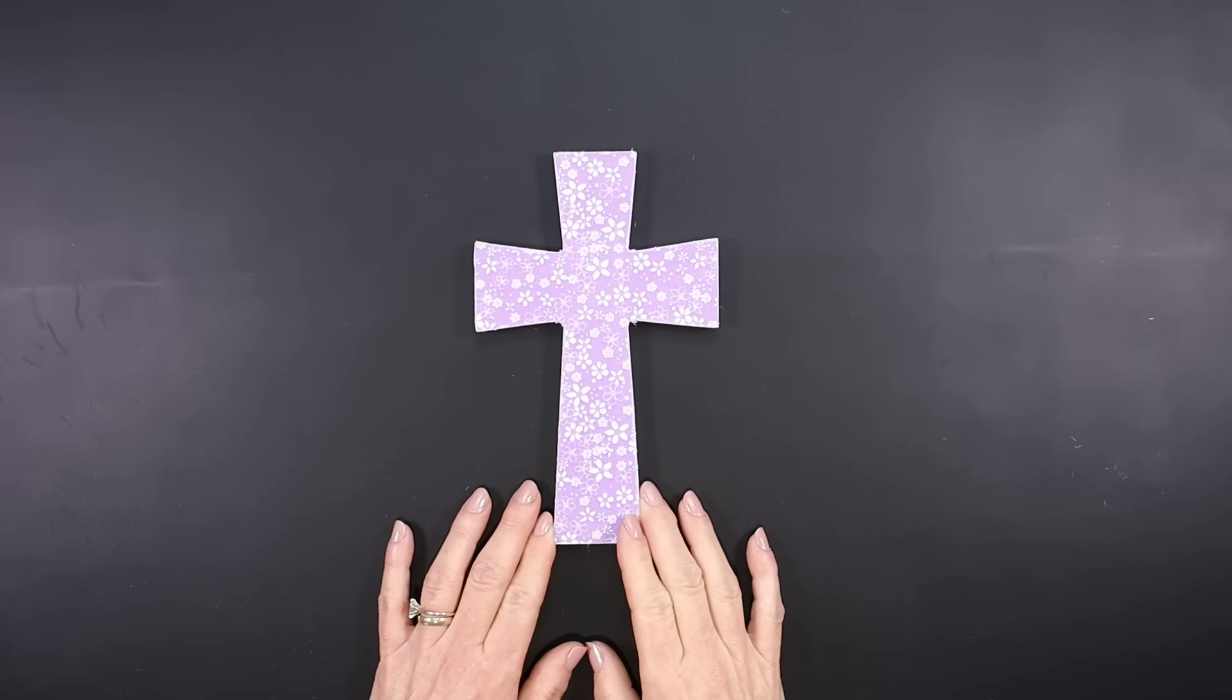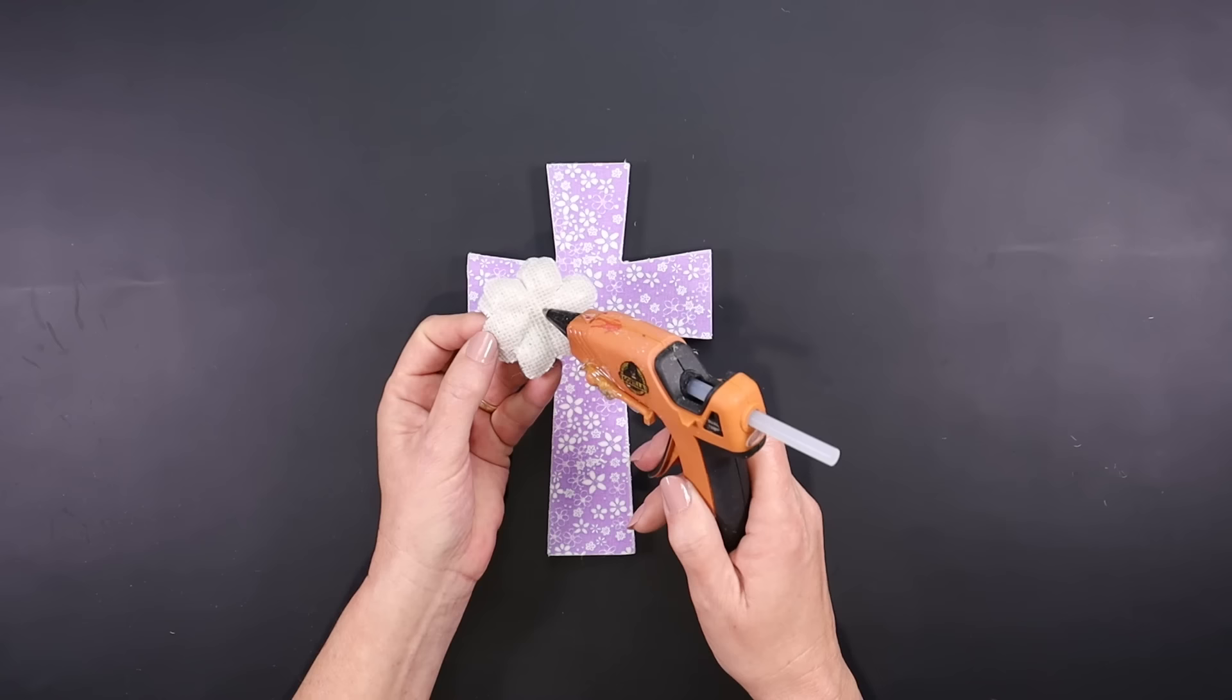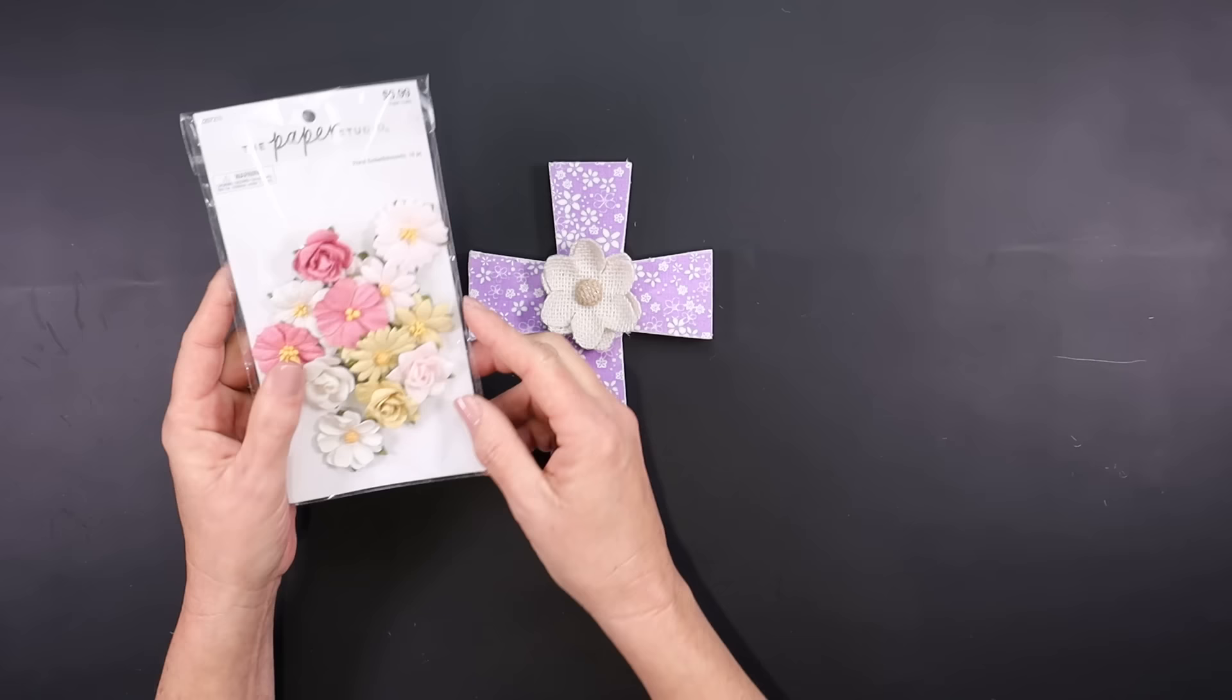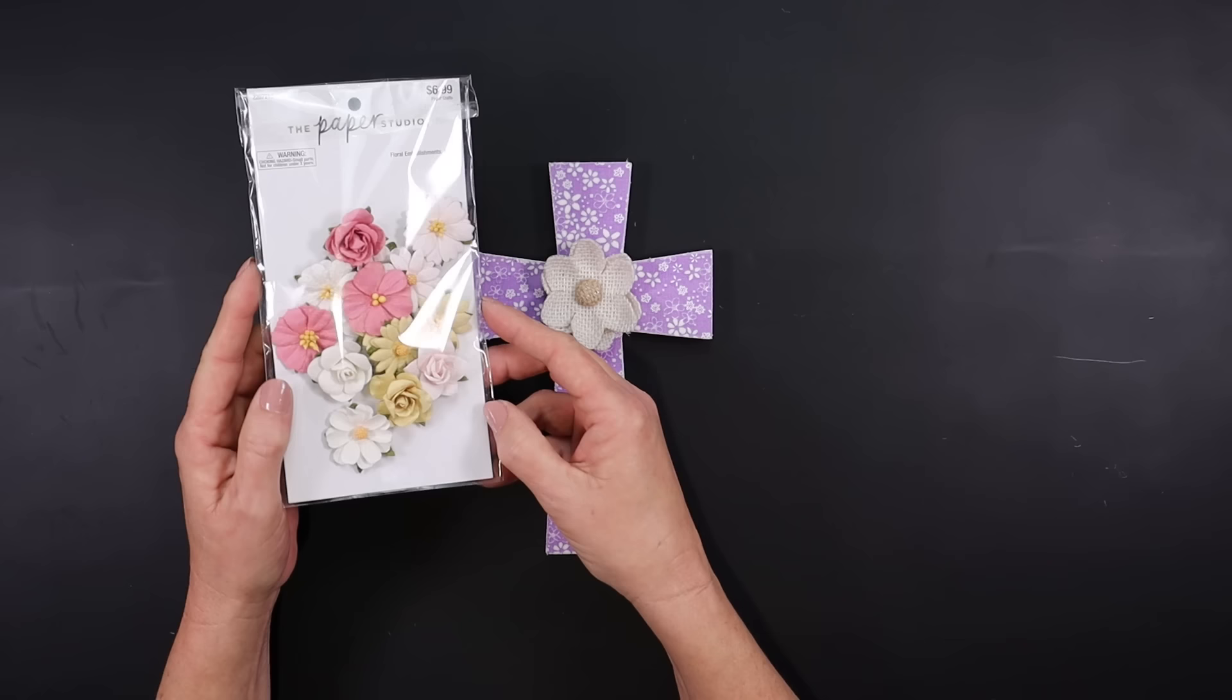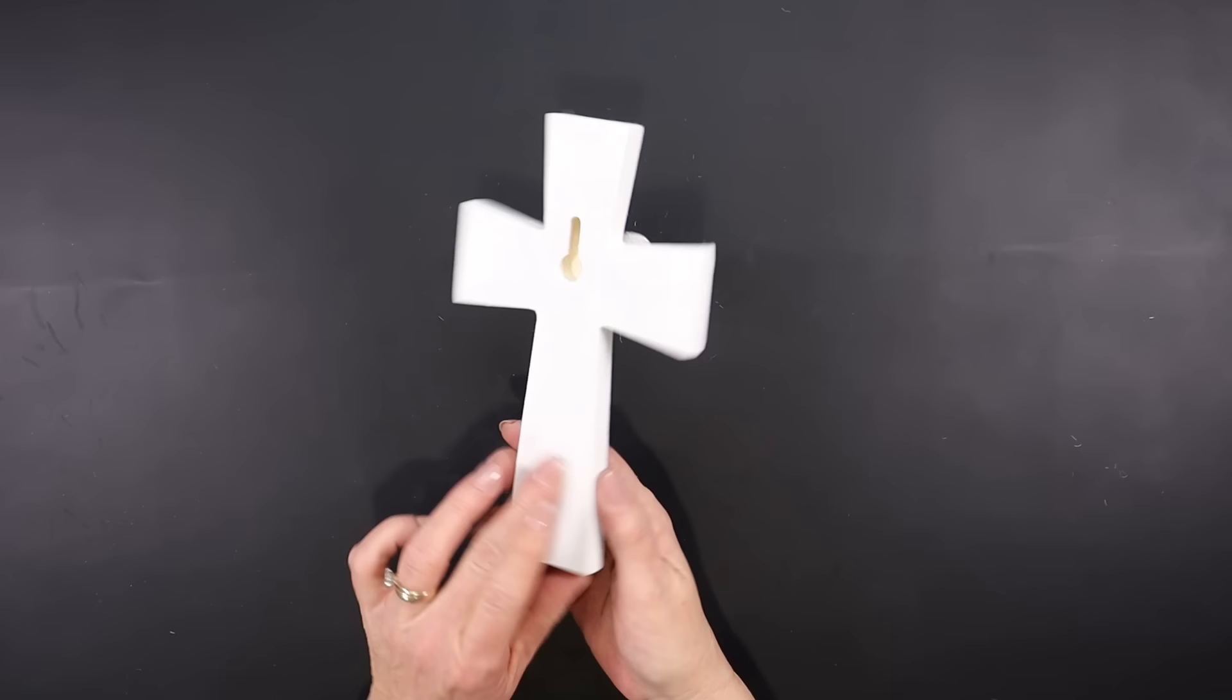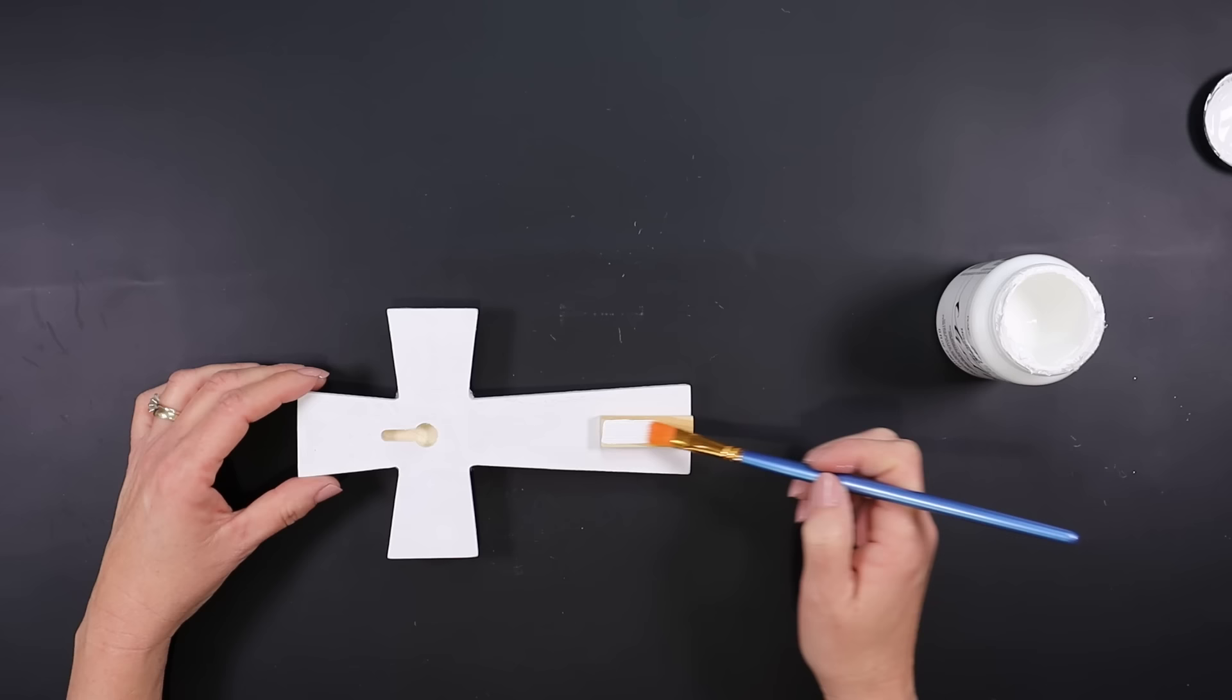I'm going to be using a burlap flower sticker from Dollar Tree and hot gluing that right to the center. And I also have some beautiful paper flowers from Hobby Lobby that I decided to add one right in the center of the burlap flower. Now my cross has a place where you could hang it up on the back, but I am going to hot glue a tumbling tower piece so that it will be able to stand up, and then I'm going to touch that up with some white paint so it looks like it was meant to be there.